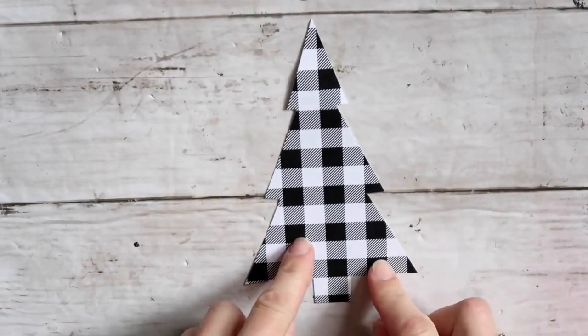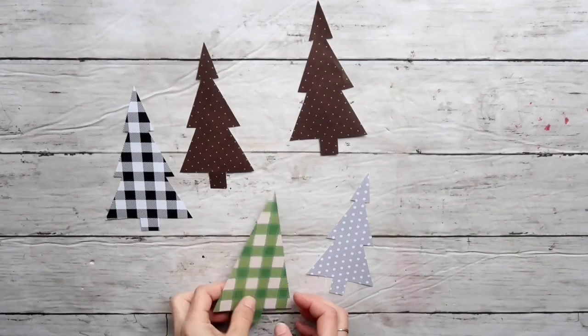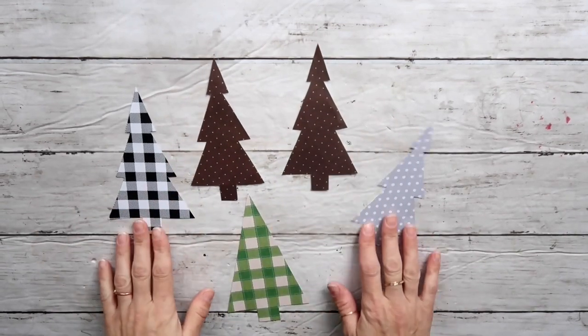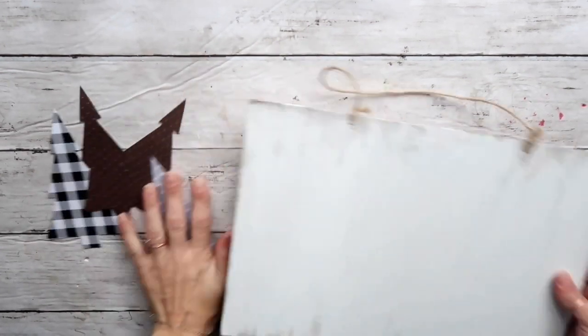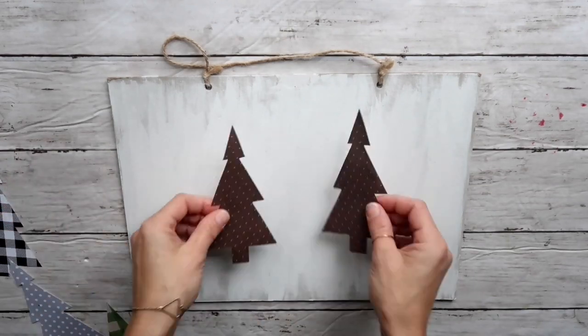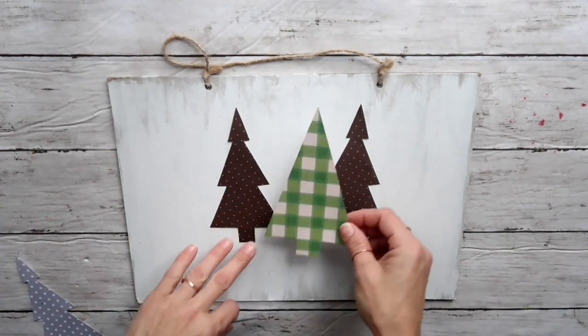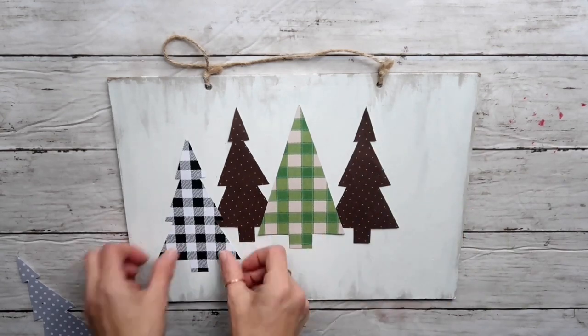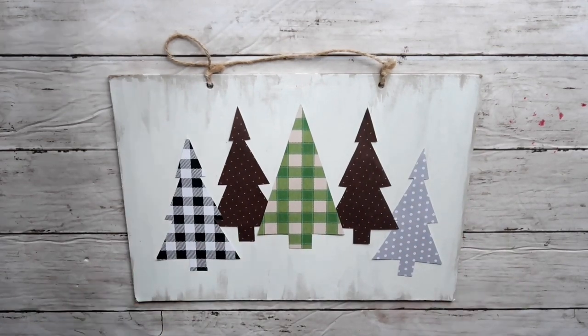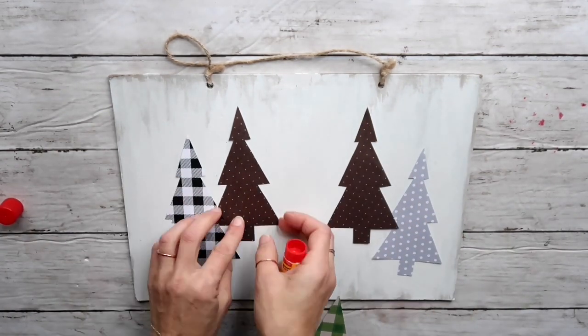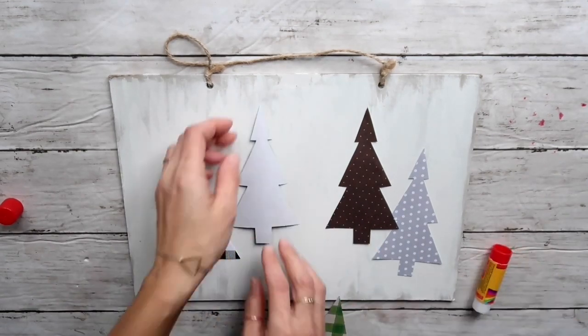This is how it looks like. Now the next ones I'm going to make exactly the same, just a little bit smaller. Now that I have all of them cut out, I'm going to position them the way I want and then take regular school glue and attach them one by one to my board.